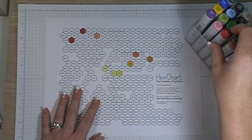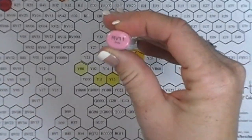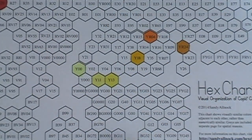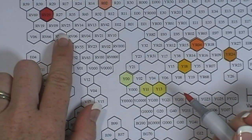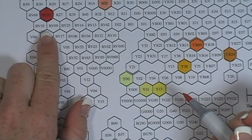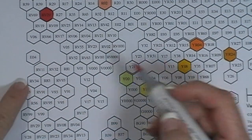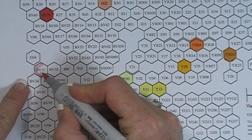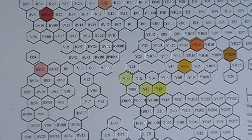So basically all you do is you take out your color and for example this is RV11. So then you go on your chart and you find RV11 which should be around here somewhere. RV13, RV10, here's RV11 right here. So then I'm just going to color in that hex and now I know that I own that color.